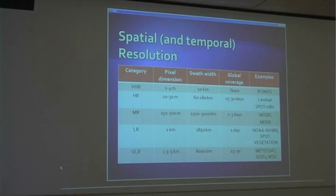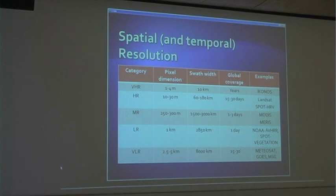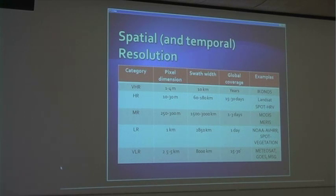That brings us to spatial and temporal resolution of these different sensors. I'm focusing mostly on space-borne sensors — what areas do they cover, what are the pixel dimensions, and what are the swath widths? The swath width is basically the area that will be covered each pass, or the path that the sensor will scan as it goes over the Earth. A very low resolution sensor, like meteorological satellites, can cover the whole Earth every 15 to 30 minutes with a swath width of 880,000 kilometers, which is very wide but gives us very little detail — it can tell us cloud coverage and weather movements, but not specific geological composition. As we move up toward higher-resolution sensors, we get smaller plot areas with pixel dimensions of 1 to 4 meters — for example with the IKONOS — but it takes a few years to cover the entire Earth each time.